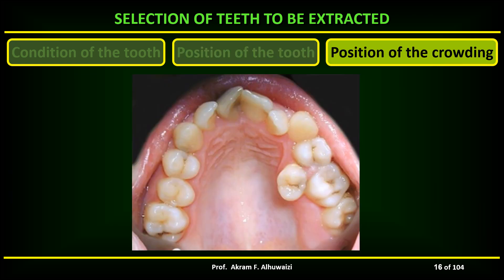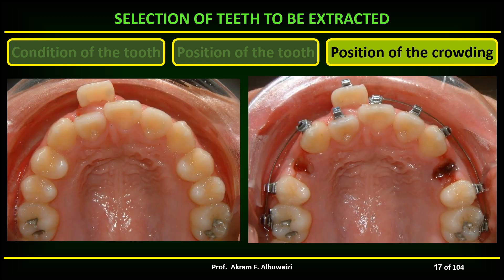For the position of the crowding, crowding in one part of the arch is more readily corrected if extractions are done in that part rather than a remote area — for example, extracting the upper five where the crowding is present. However, incisor crowding is usually relieved by premolar extractions and not extraction of the incisors themselves, as it gives a more pleasing appearance and occlusal balance than with incisor extractions.